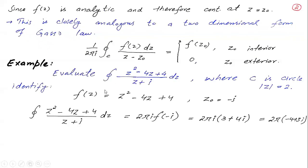For example, we have to evaluate this integral where C is a circle with center and radius such that z0 = -i is interior. Thus, the result is 2πi times f(-i), where you put z0 = -i into the function and this is your result.